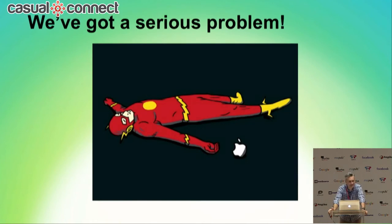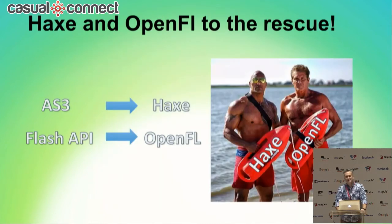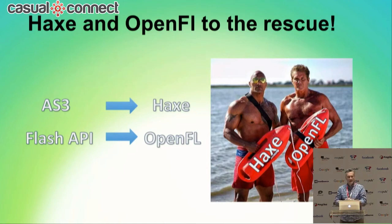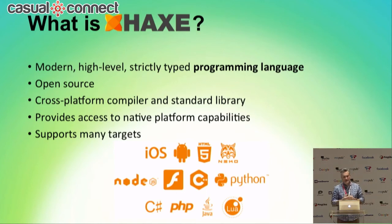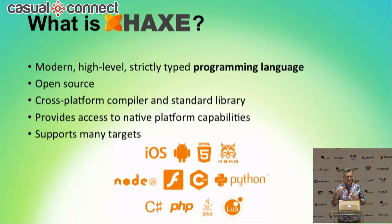So we looked around a bit and we found Haxe and OpenFL. Haxe is a programming language — you can think of it as a replacement for ActionScript — and OpenFL is a library you can think of as a replacement for the Flash API. Haxe was first introduced in 2005, so it's been around a while, and it's gone through numerous changes and improvements since then. It acts as a source-to-source compiler: you feed in Haxe code and for the HTML5 target you get out JavaScript.